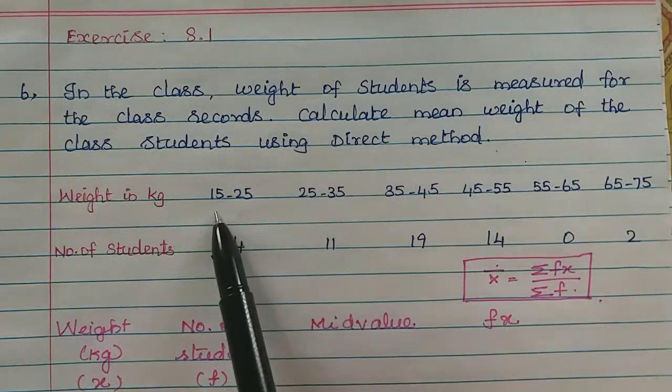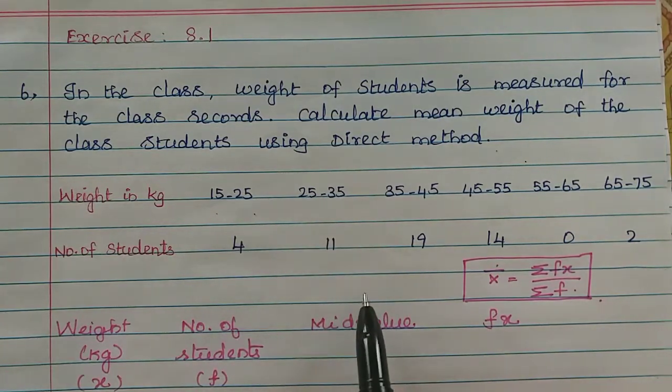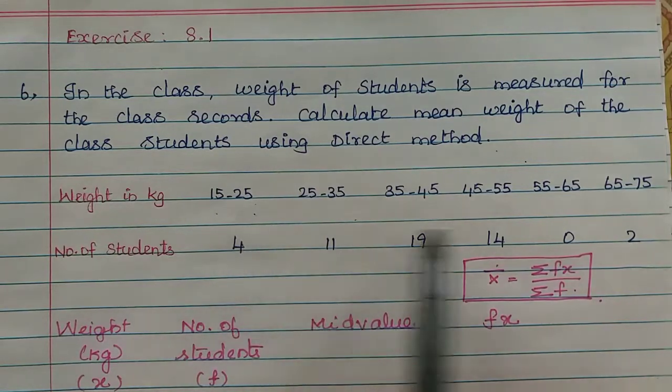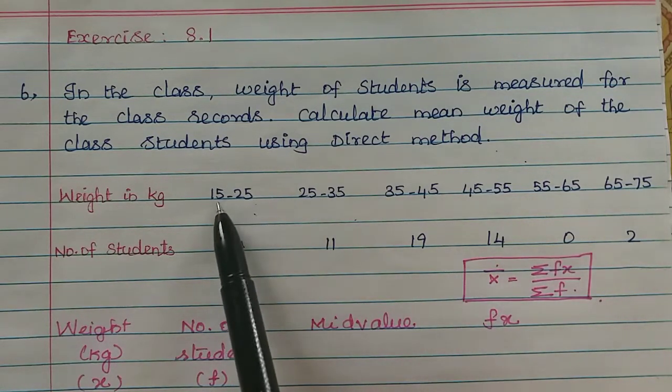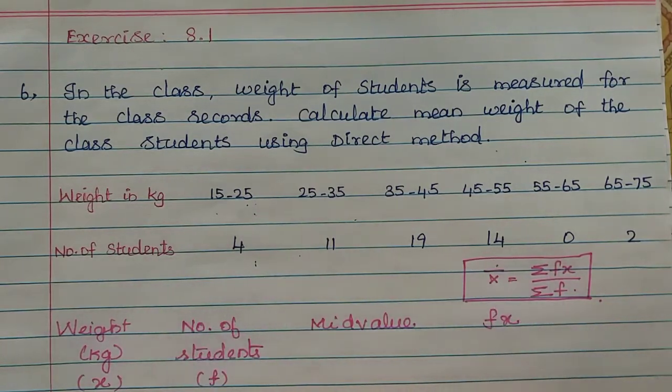Calculate mean weight of the class students using direct method. So in a class, weight of the students is measured in kg. We will see how many students are in 15 to 25 kg weight and the number of students list.